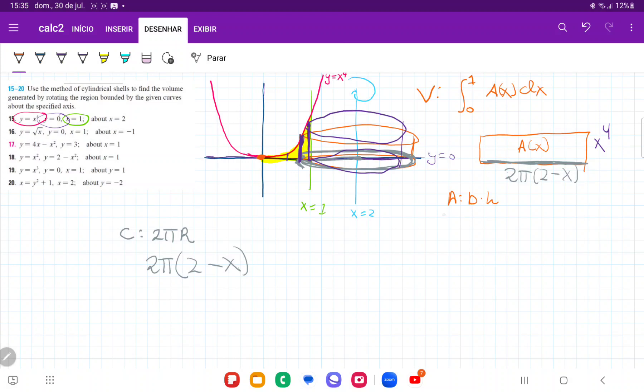And so my area is base times height. So it's 2 pi times 2 minus x times x to the power of 4. And I'm just going to distribute this. So it's just 2 pi times 2x to the power of 4 minus x to the power of 5. Let me just double check that my math is correct. Yes, it is. And so now I'm ready to set up my volume.